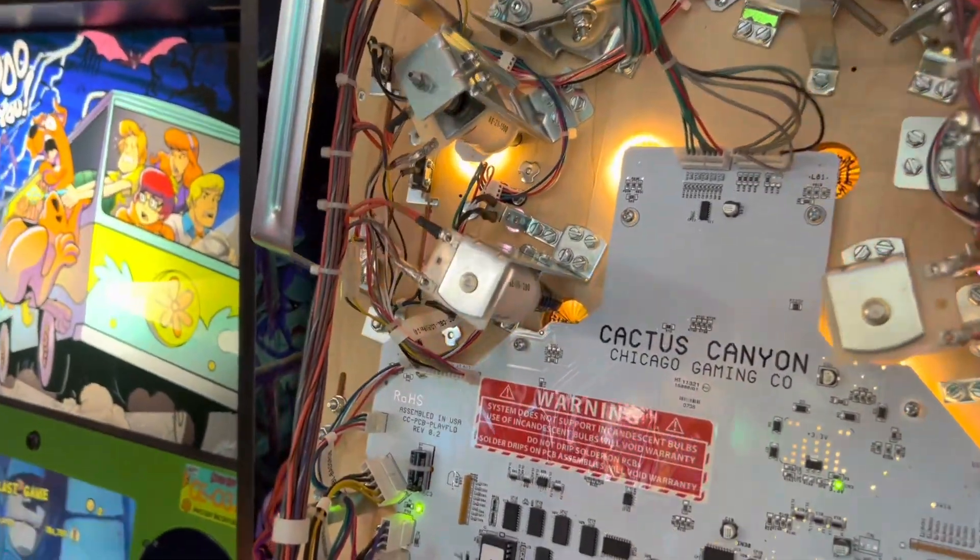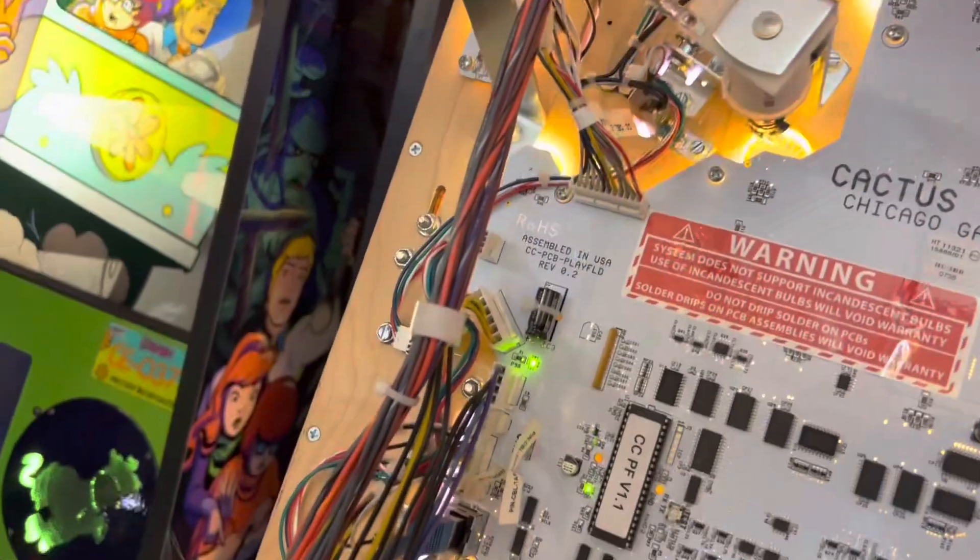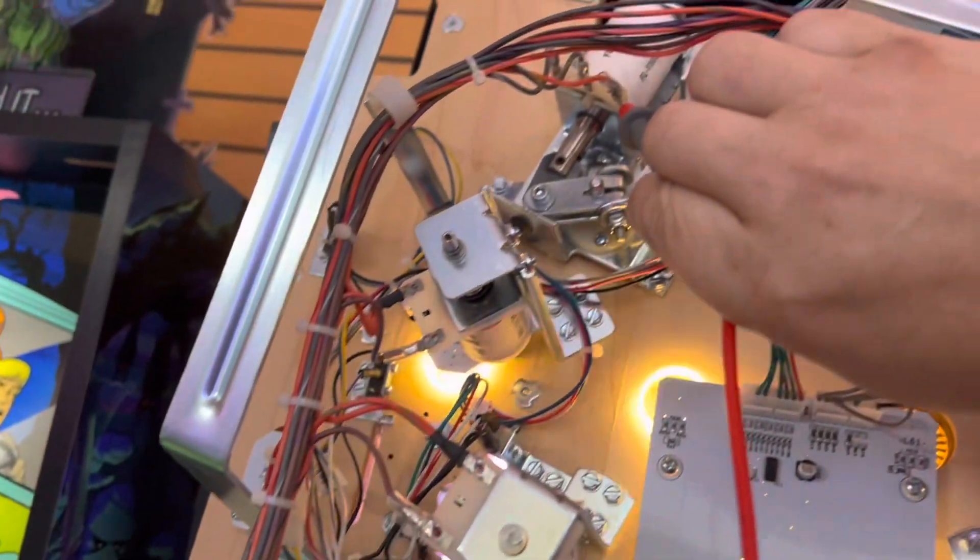All right, we got our multimeter out. And we got one side connected to ground. And what we're going to do is we're going to test the hot side of the coil, which is usually the orange wire here. Sorry about that. There we go.